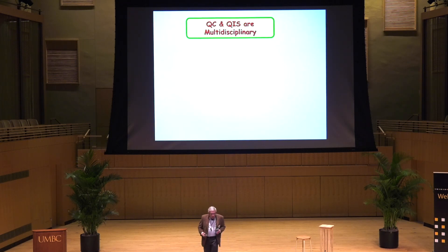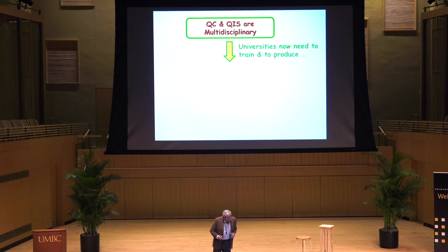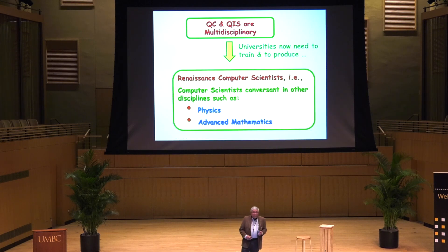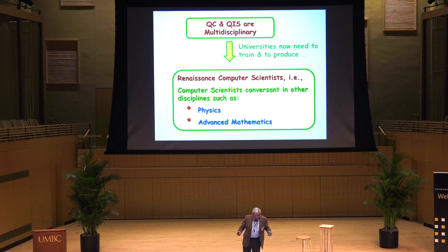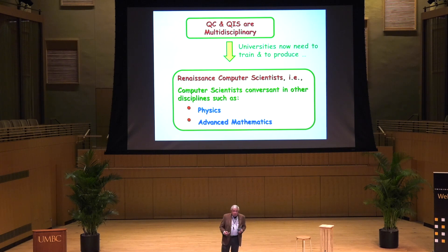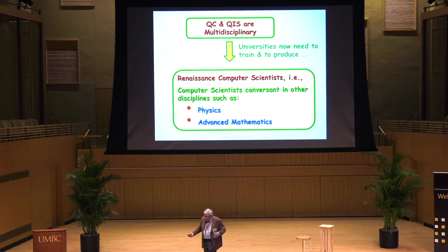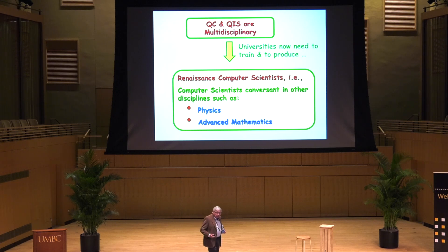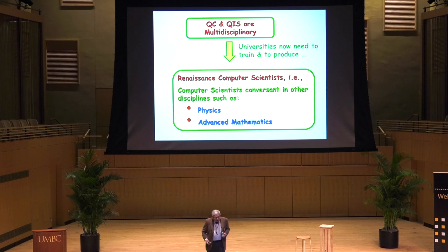Universities will need to train what I call renaissance computer scientists — computer scientists conversant not only in computer science, but also in other fields such as physics and advanced mathematics. I ask all my PhD students in quantum computer science and quantum algorithms to take courses in physics, quantum field theory, quantum mechanics, and advanced math courses in abstract algebra and Lie groups.